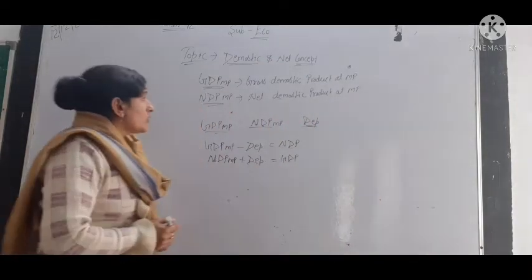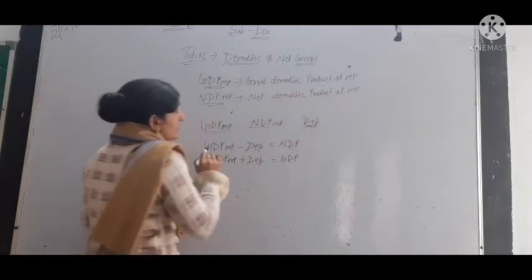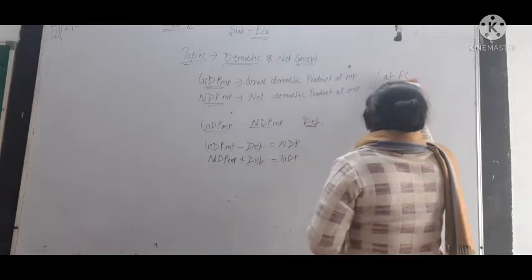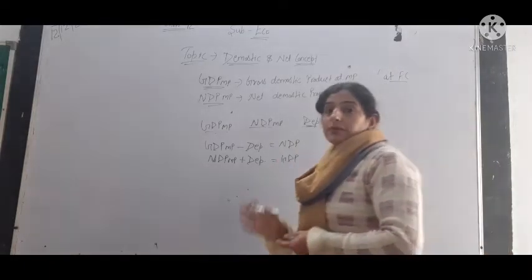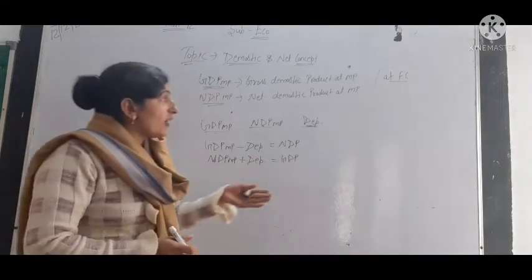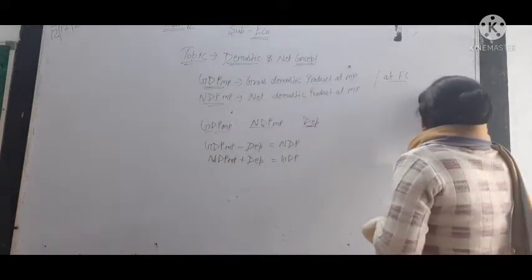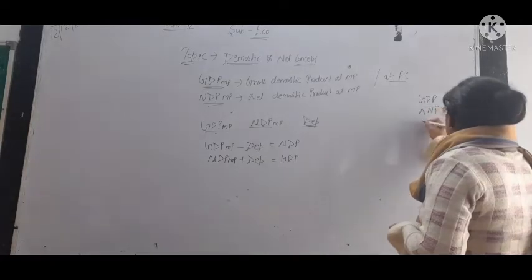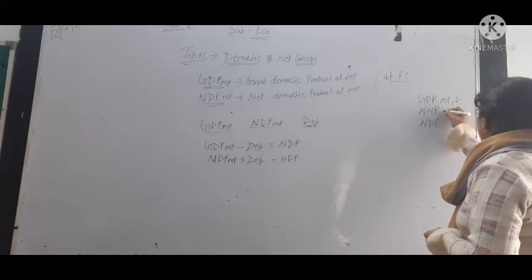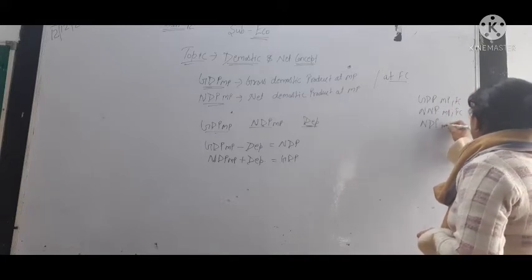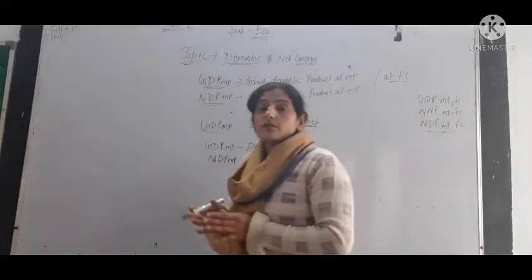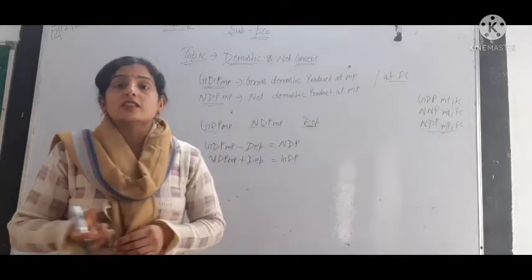Now we will talk about GDP at market price and GDP at factor cost. What is the difference between market price and factor cost?